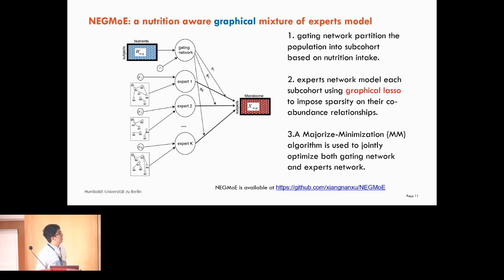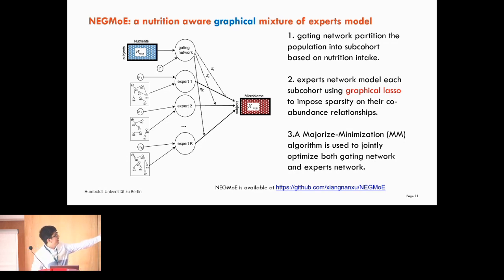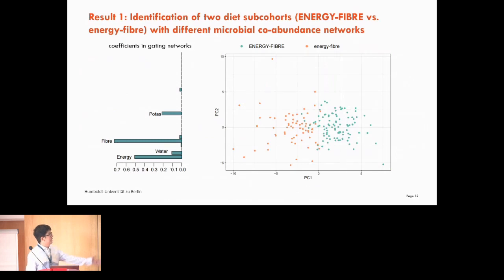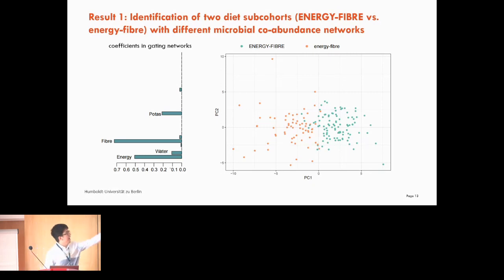We applied NIGMO on a real-world microbial study — our previous Parkinson's disease dataset. We focus here on the microbial relationships rather than the disease condition. We have a food frequency questionnaire summarizing 225 nutrition features, and 16S microbial sequence data summarized at different taxonomic levels. For the results, we obtain two latent classes. Looking at the coefficients, energy and fiber contribute most to separating the two latent classes. We call these the high energy high fiber group and the low energy low fiber group. A PCA plot on the nutrition space shows this separation.